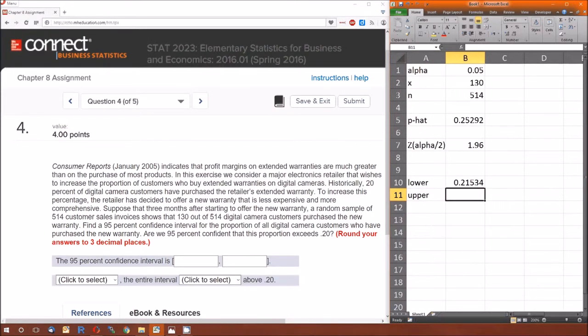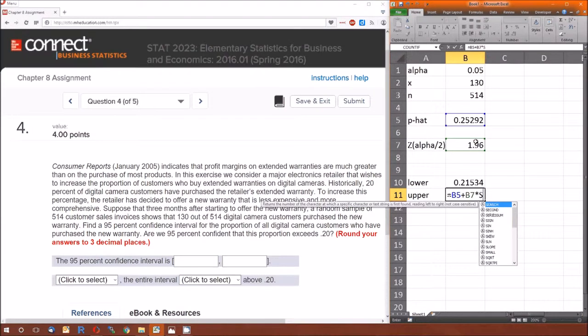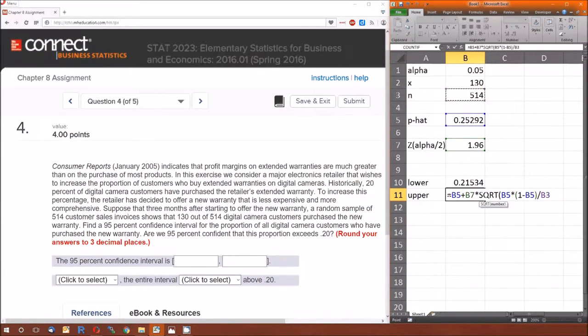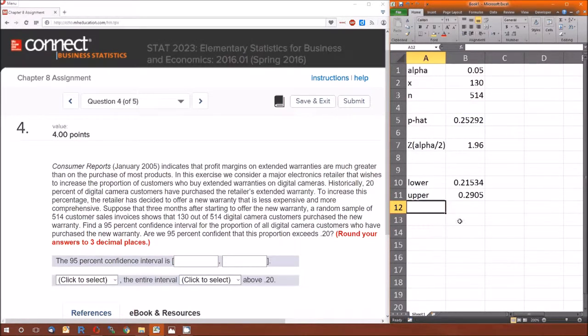The upper bound is going to be very similar to the lower bound. The only difference is the lower bound uses p-hat minus and the upper bound is going to be p-hat plus. So this will be equal to p-hat plus that z value times the square root of p-hat times 1 minus p-hat divided by n. So we're 95% confident that the true proportion of people who buy these extended warranties is between 0.21534 and 0.2905. Since both of those are above the 20%, we're 95% confident, actually more than that, but we're at least 95% confident that the proportion has indeed gone up. Because we're 95% sure it's between these two, and everything between these two is greater than 20%, therefore we're at least 95% confident that the proportion has increased.